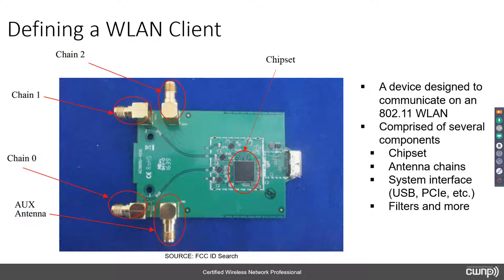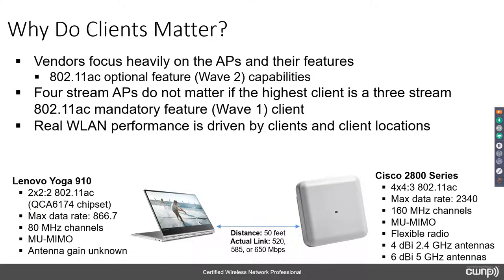We'll talk more about USB adapters later. But first, why do clients even matter? Vendors focus heavily on APs and their features — for example, saying they have an 802.11ac optional-feature-capable, wave 2 AP. That means it supports optional features like 160 MHz channels (80 MHz is required by 802.11ac) and multi-user MIMO (optional, not required). Wave 1 didn't have it; wave 2 does.